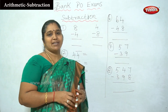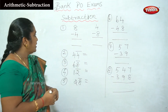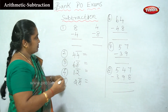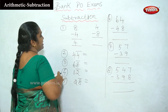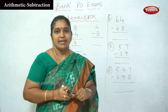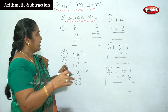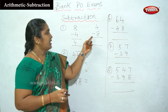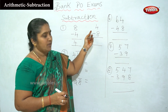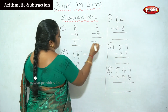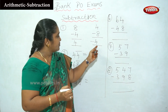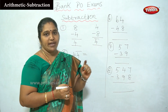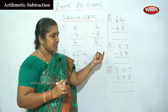Now let us see the subtraction easy method. Usually we can subtract 8 minus 4 — the answer is 4. The big number is 8 and the small number is 4, so we can easily subtract 4 from 8. But here we have 4 minus 8. The big number is 8, the small number is 4, so the answer is minus 4. We put a minus sign — a bar — above the digit.